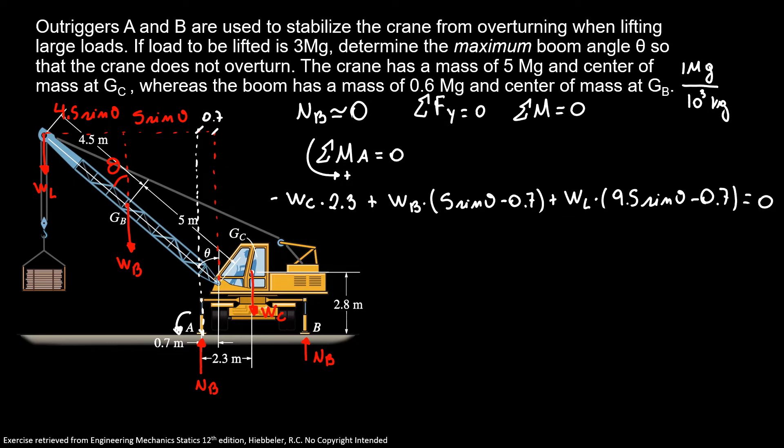Here the only unknown is our sine of theta. So we can find the value of our theta. So here we have the weight of the boom, that is 0.6 times 10 to the 3rd times 9.8 times 5 sine theta minus 0.7 plus our load, 3 times 10 to the 3rd times 9.8 times our distance 9.5 sine theta minus 0.7. We can cancel our weight of the crane, 5 times 10 to the 3rd times 9.8 times the distance 2.3.